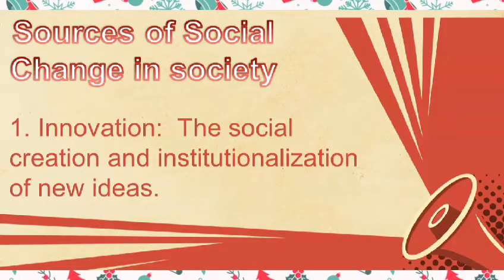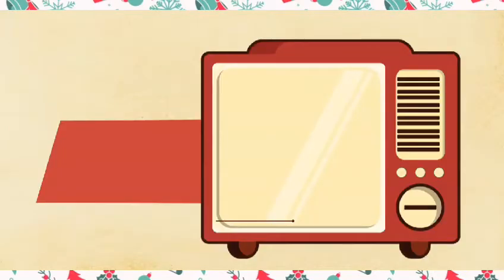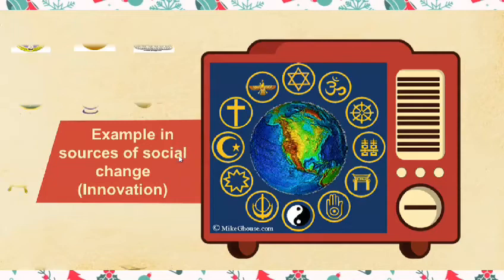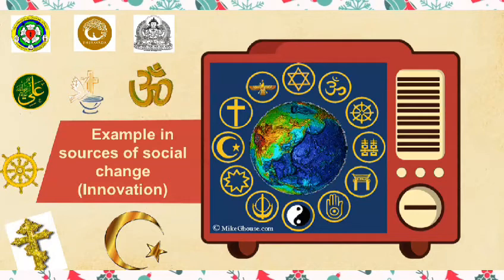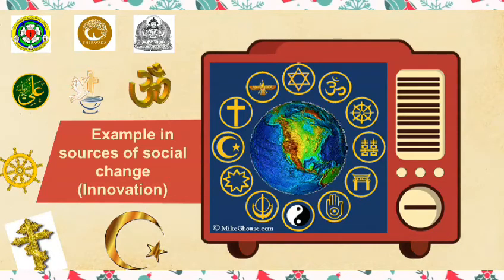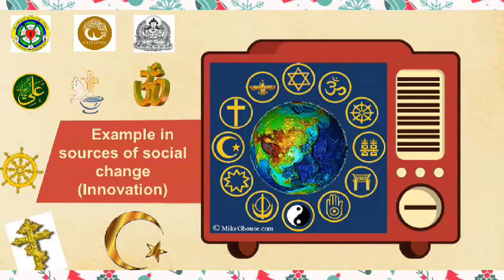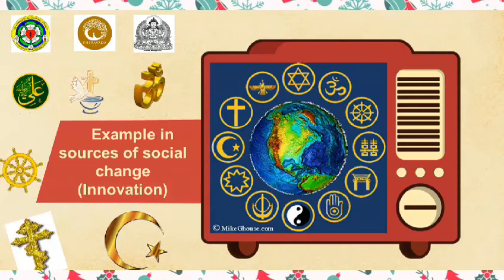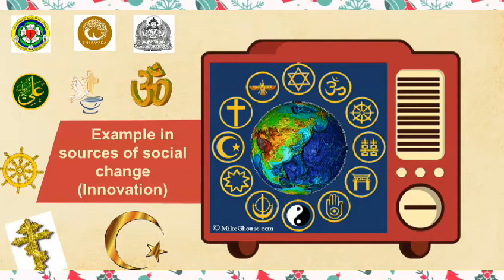Here are the sources of social change. First is Innovation — the social creation and institutionalization of new ideas. Our example is the concept of freedom of religion, which paved the way to the founding of different religions and their separation from the mainstream religion. This means that Protestants, Anglicans, Lutherans, Eastern Orthodox, and other religions resulting from different interpretations can freely exercise their faith and culture without the mainstream religion's intervention.